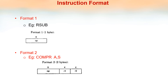In SIC, we have seen only one instruction format, which is 24-bit. But in SIC XE, we have 4 formats. Format 1 is a 1-byte format, meaning 8 bits. Only the opcode is present, which has a standard value represented as 8 bits.